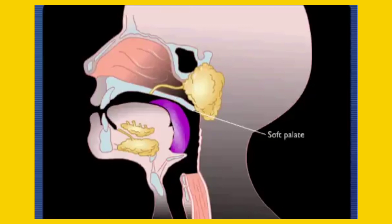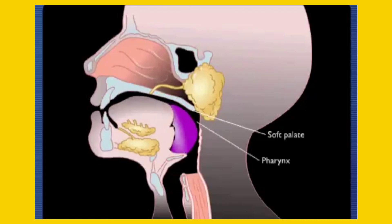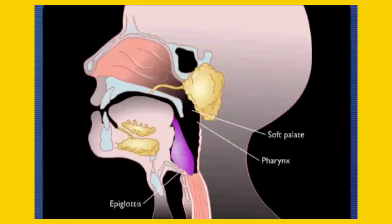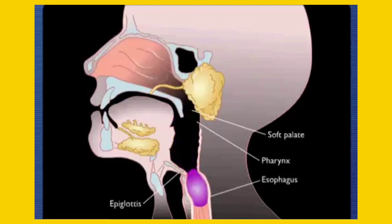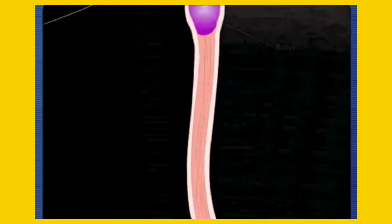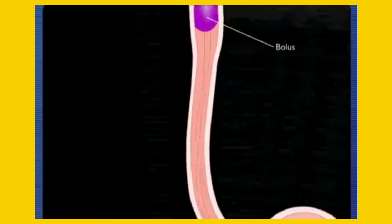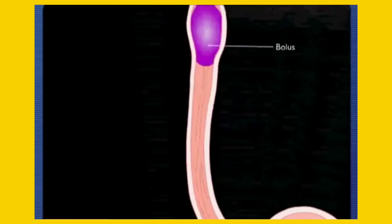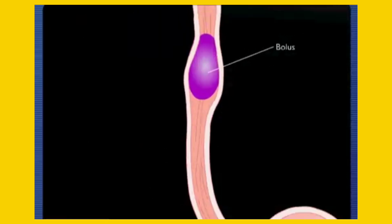As we swallow the food, the soft palate locks the upper pharynx to prevent food from entering the nasal cavity. Multiple voluntary muscles in the face, neck, and tongue contract, pushing food particles through the pharynx. The food passes over the epiglottis, which prevents food entry into the respiratory system.